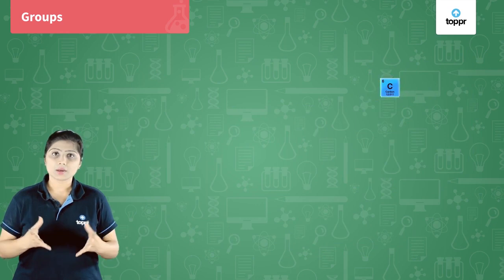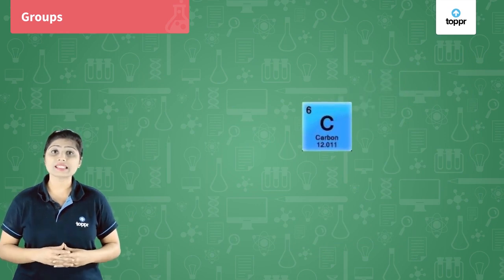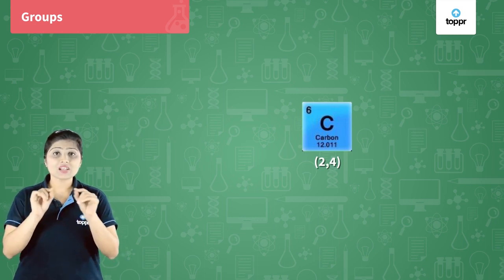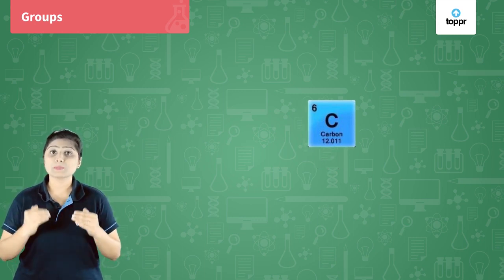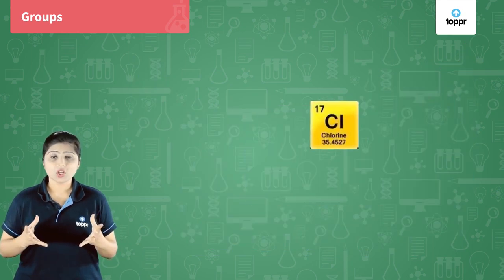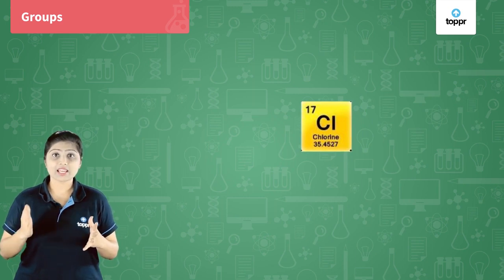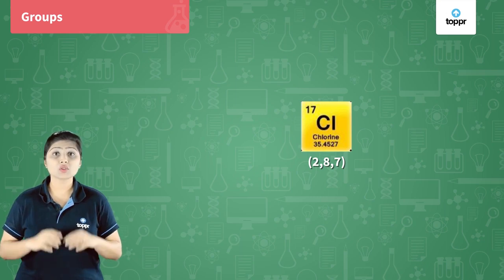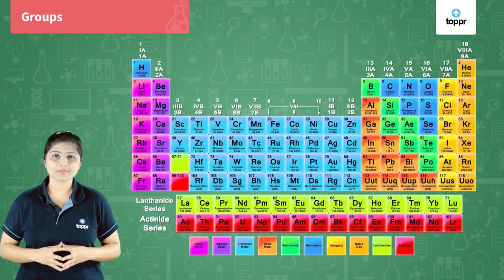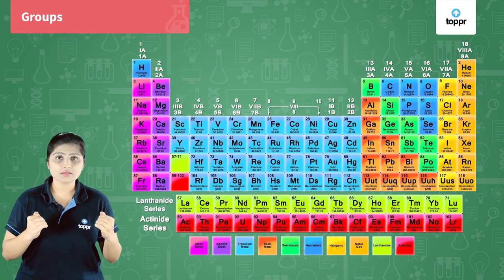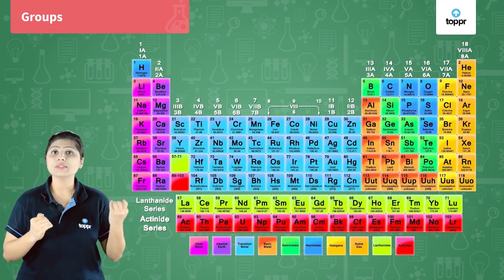Let us talk about carbon. Carbon is the sixth element. Its electronic configuration is 2, 4. In the last orbit, carbon has four electrons, so it is placed in group 14. Similarly, chlorine is the 17th element. Its electronic configuration is 2, 8, 7 — seven electrons in its last orbit, so it is placed in group 17. Remember: valence electrons ranging from 3 to 7 will belong to groups 13 to 17.